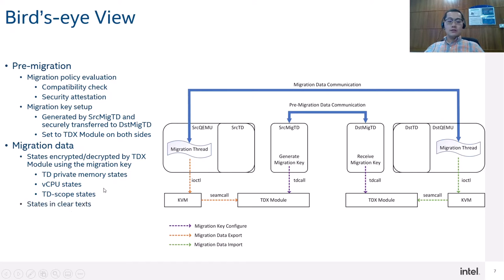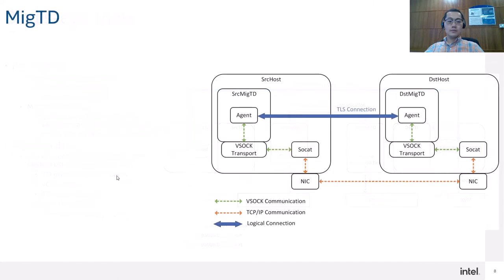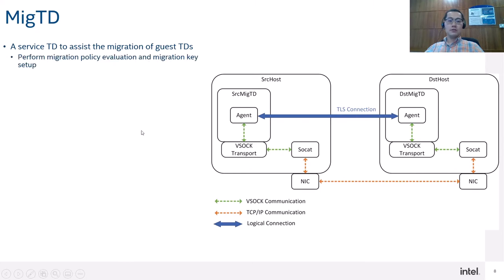And the states in cleartext — meaning not encrypted — include the TD shared memory states. For micro TD: it's a service TD to assist the migration of guest TD. Its basic responsibility is to perform migration policy evaluation and the migration key setup as mentioned before.